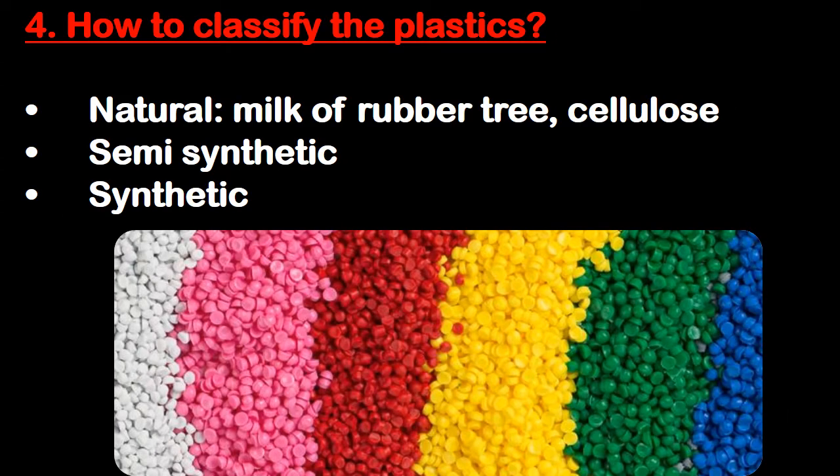Question number four: how to classify the plastics? First is natural, means milk of rubber tree or cellulose. Then second is semi-synthetic and third is synthetic.